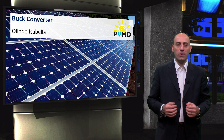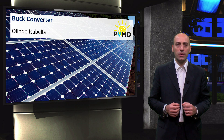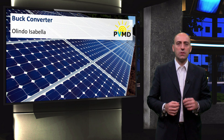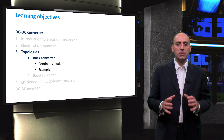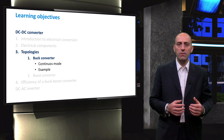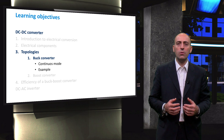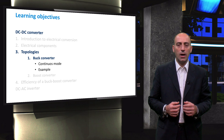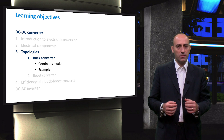Now that we know the basic components needed for DC to DC power electronics, we can start with the first and simplest technology, which is the buck converter, also called the step-down converter. Its role is to decrease the DC voltage coming from the PV side to a more suitable one. In this video, we will show you its electrical circuit and the operation in continuous mode. After the theory, we shall present a simple example to better understand it.